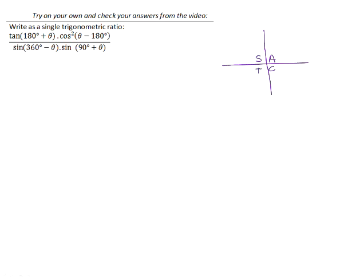The CAST diagram tells us where the various trig ratios are positive. Everything in the first quadrant can be reduced by 360 plus an angle. Everything in the second quadrant, 180 minus. In the third quadrant, 180 plus. And in the fourth quadrant, 360 minus.